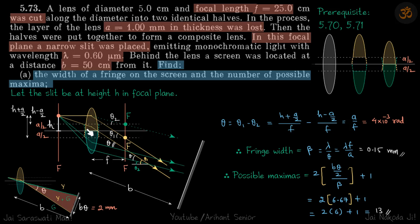In the diagram, the yellow lens focal length lies on one line and the green lens focal length on another. We can place the slit at any point on the focal plane. Let's say we place it at a height h from the axis of the joint lens. The focal point of the green lens is at height a/2 above the axis and the yellow lens focal point is a/2 below.